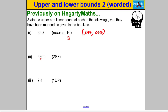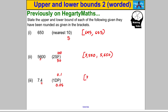This one has been rounded to 2 significant figures — the hundreds column, so to the nearest hundred. Half that to get 50, subtract it to get 5550 for the lower bound, and add it on to get 5650 for the upper bound. The last one has been rounded to 1 decimal place, the nearest tenth. Half that to get 0.05, subtract for the lower bound of 0.35, and add on for the upper bound of 0.45. That's the skill we need to apply to our worded problems.